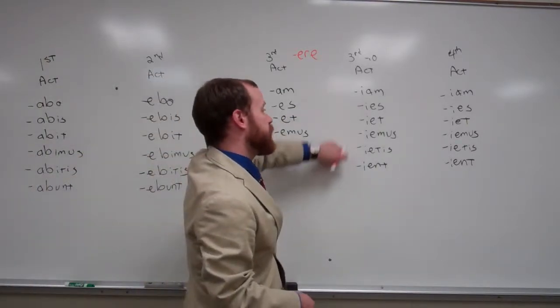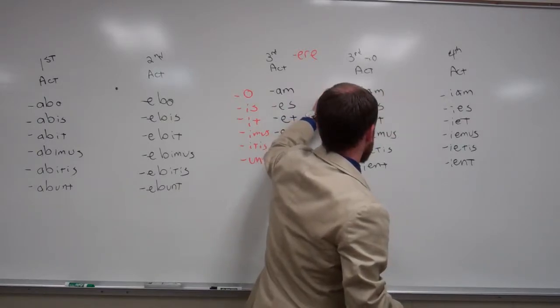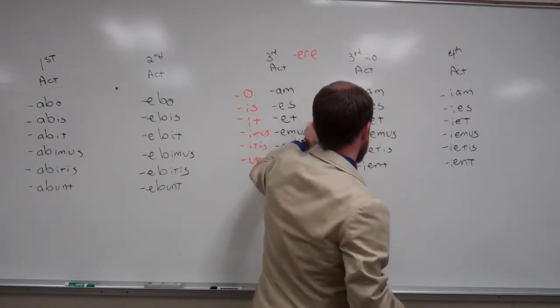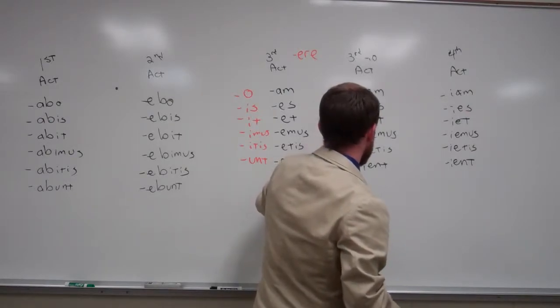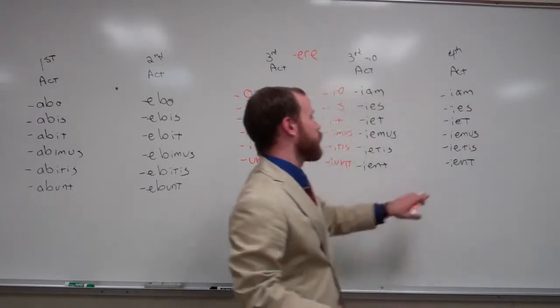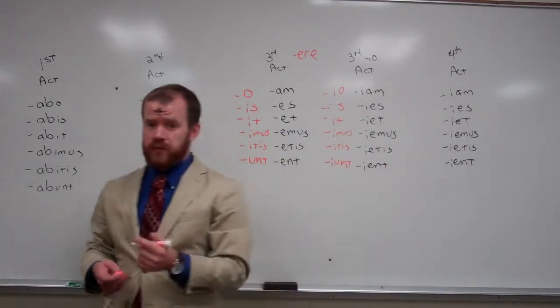Same thing here. We still saw that, we saw io, is, it, emus, etis, unt. And the same for the fourth. Instead, we have these e, the ie's here, and the ia for the first person.